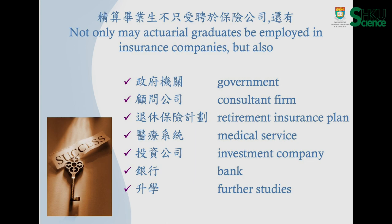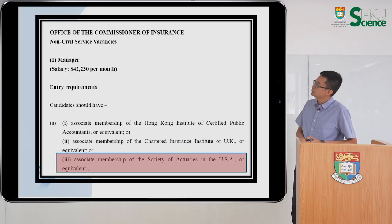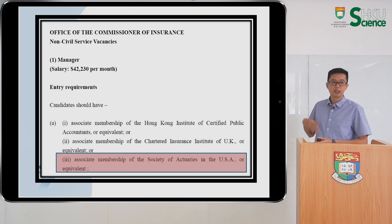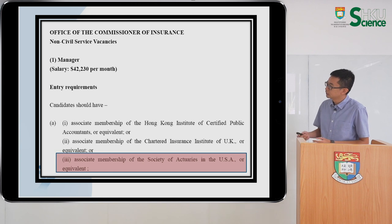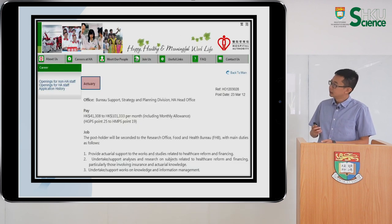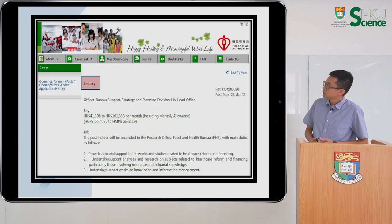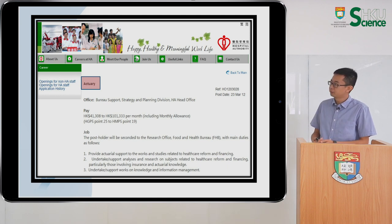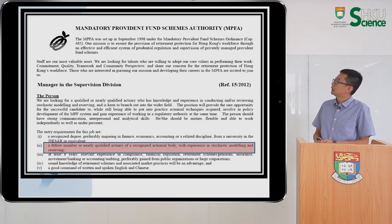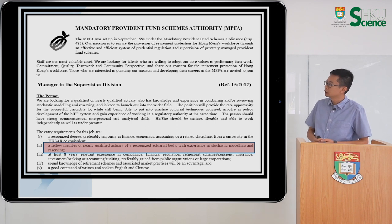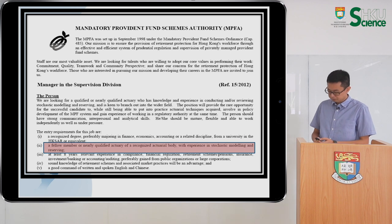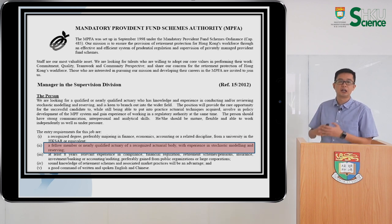Here is a job advertisement from the Office of the Commissioner of Insurance. They are hiring a manager, and if you want to apply, you have to be an associate member of the Society of Actuaries. Another example is from the Hospital Authority — they are also hiring actuaries, with a salary of about $41,000 to $101,000 per month. Another example is from the MPFA, again hiring a manager position requiring actuarial qualification. So you don't need to work only in insurance companies; other organizations including government departments are also hiring actuaries.